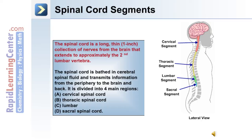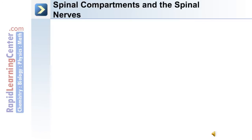The spinal cord is long and thin, approximately one inch, except for the cervical and lumbar enlargements. It is a collection of nerves from the brain that extends to approximately the second lumbar vertebra. The spinal cord is bathed in cerebrospinal fluid and transmits information from the periphery to the brain and back. It is divided into four main regions: the cervical, thoracic, lumbar, and sacral spinal cord.